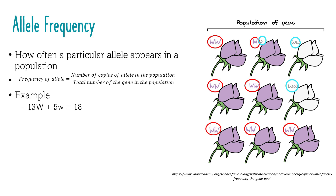By convention, when there are just two alleles for a gene in a population, their frequencies are given the symbols P and Q, where P is the frequency of the dominant allele, and Q is the frequency of the recessive allele. To calculate P, we divide the number of dominant copies, 13, by the total number of genes, 18, giving an allele frequency of 0.72. To calculate Q, we divide 5 by 18 to get 0.28.